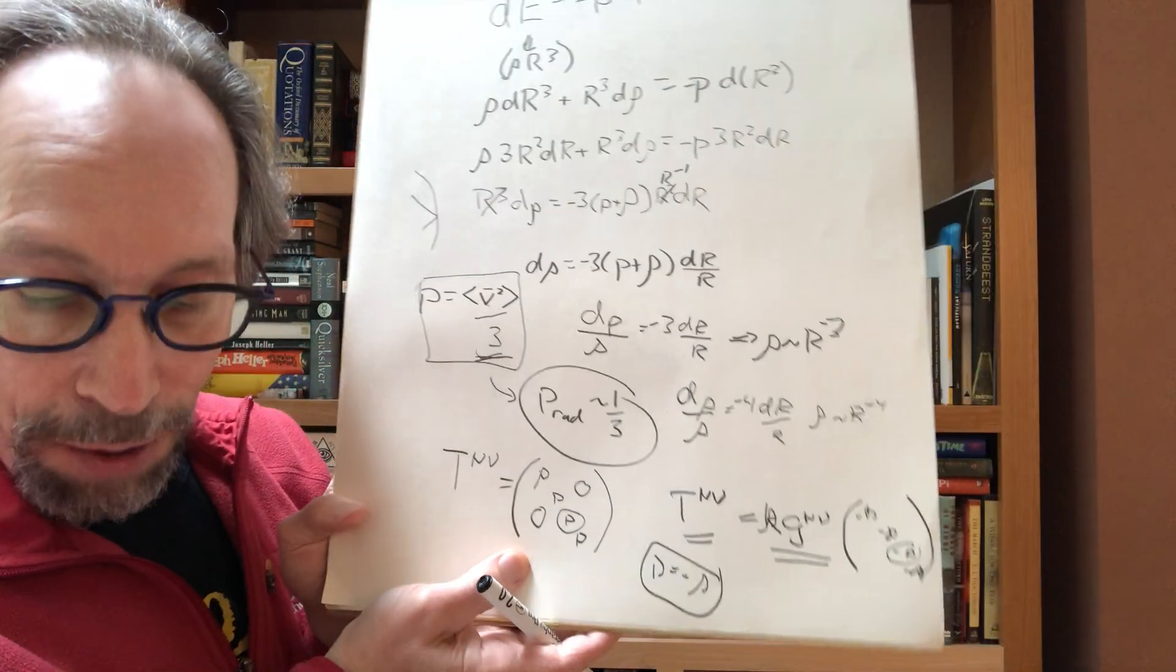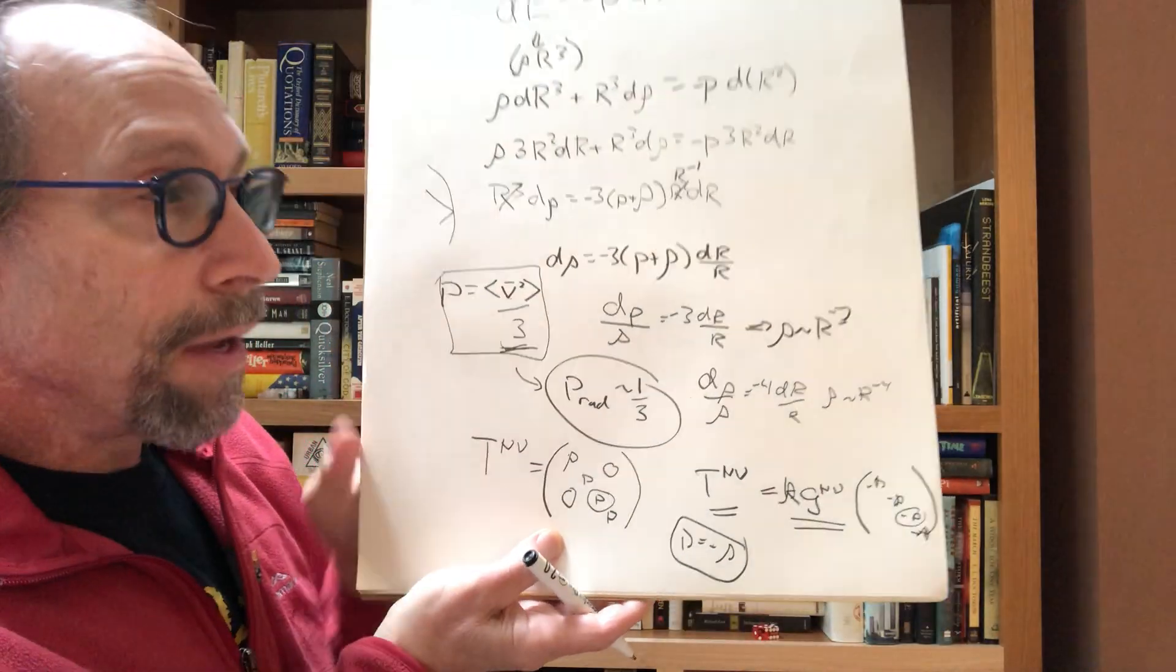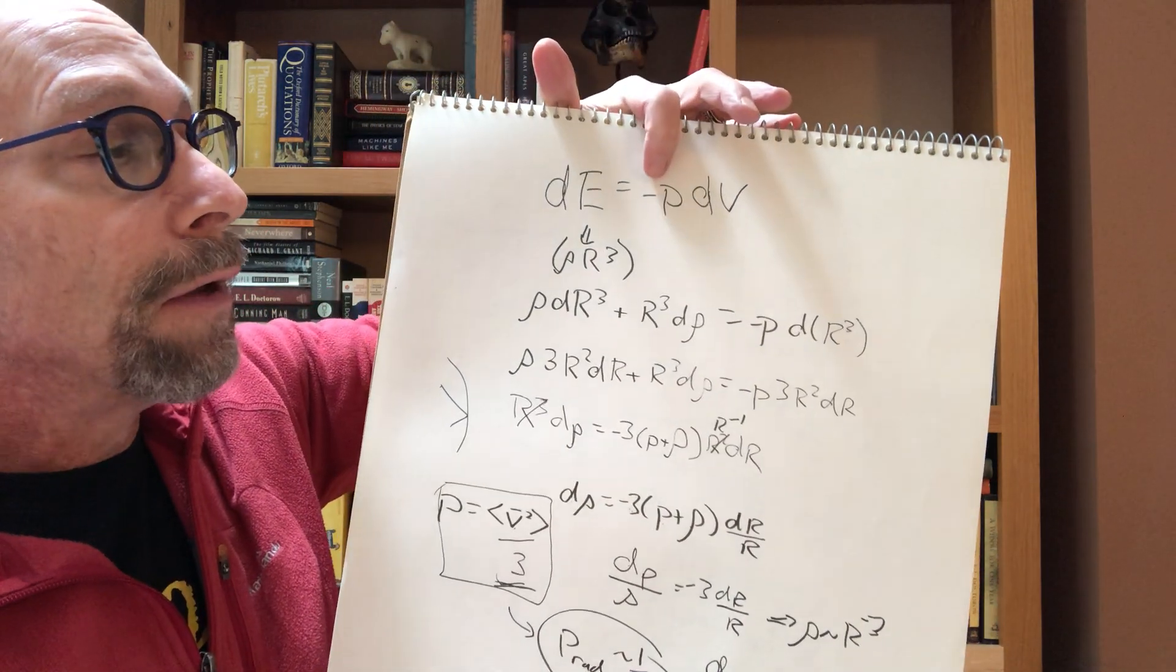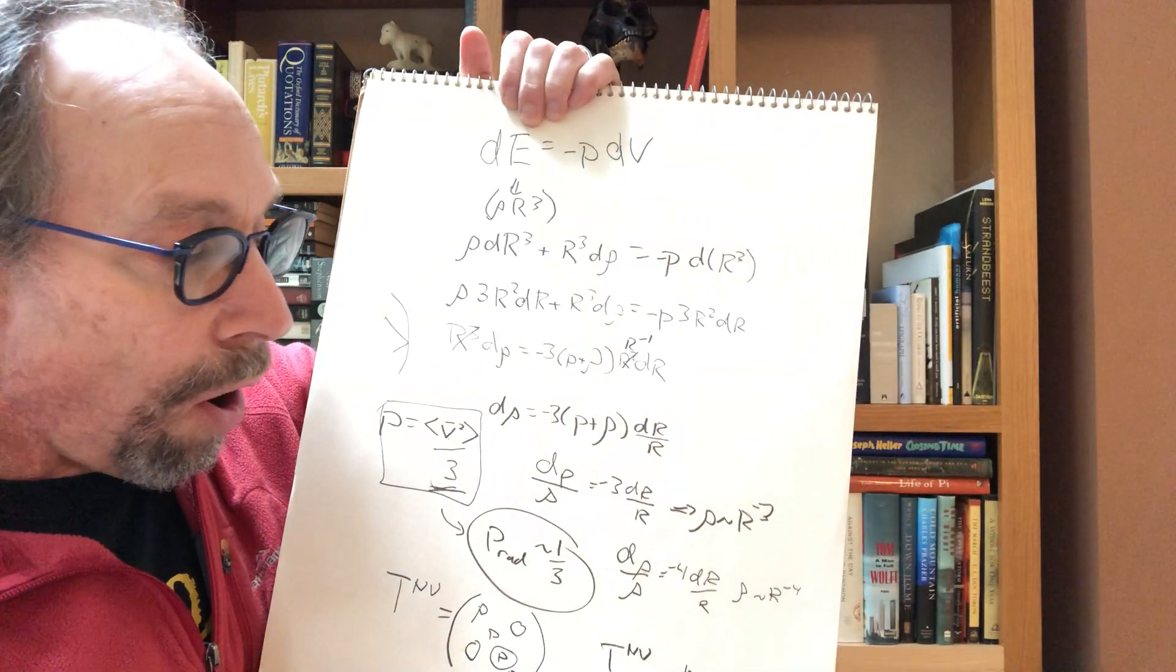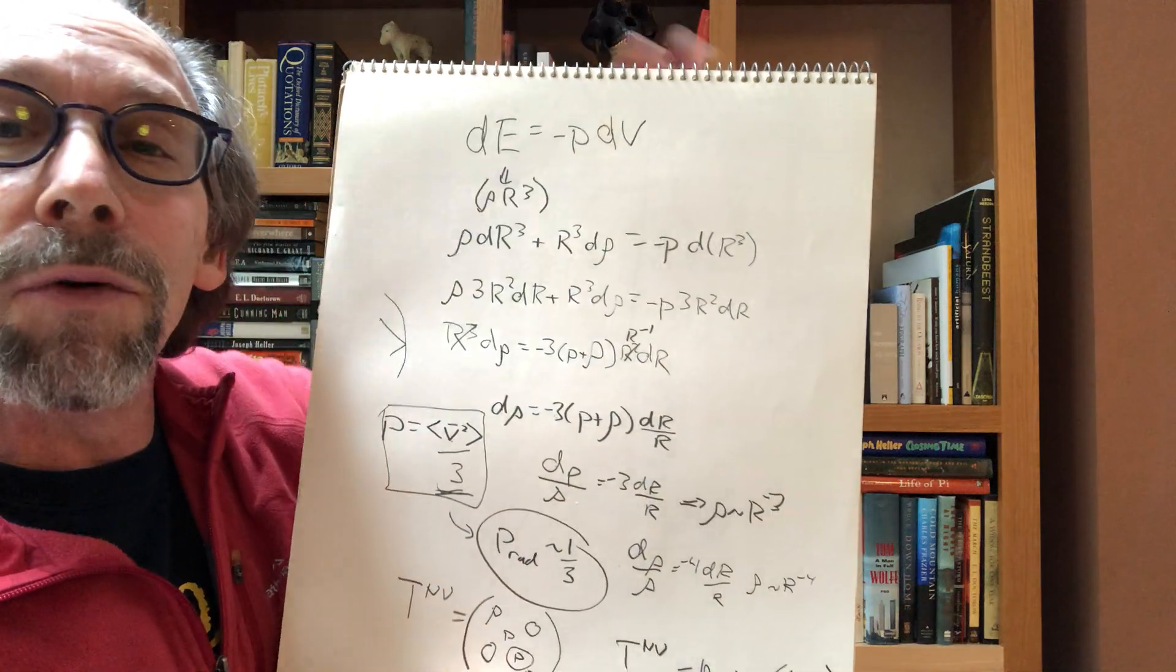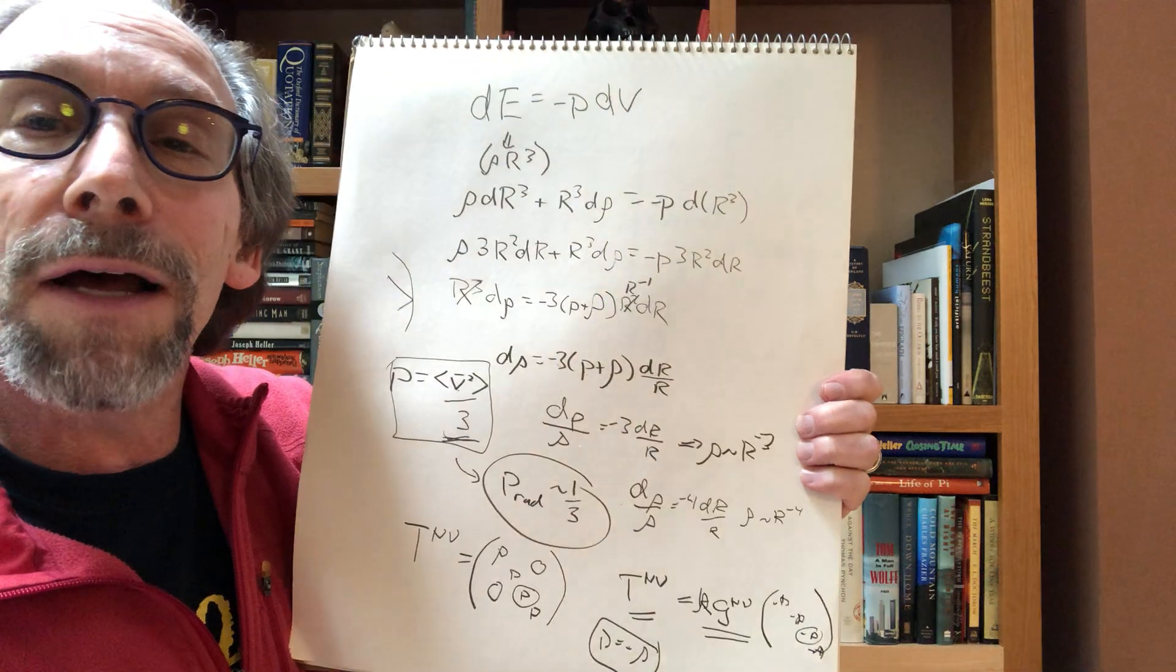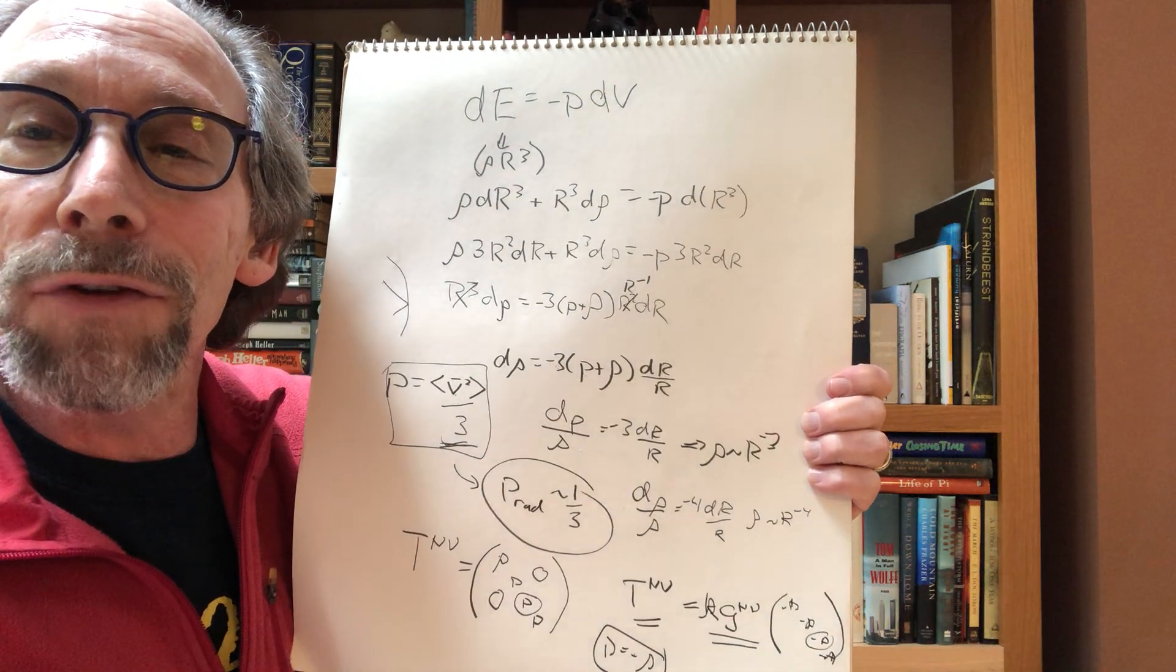So we can understand from general relativity and a really simple understanding of just work being done on the universe, how all of these components have the form they do. And you can do it with a little hand-waving in seven minutes. So that's for you math aficionados.